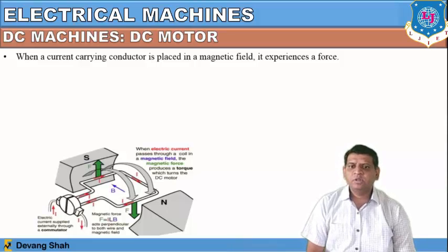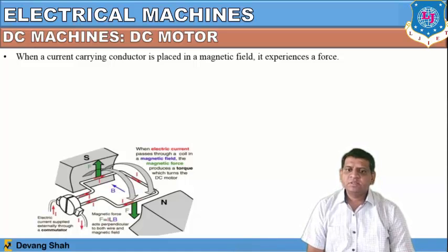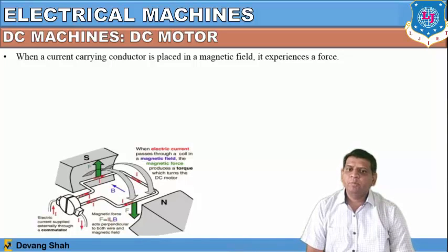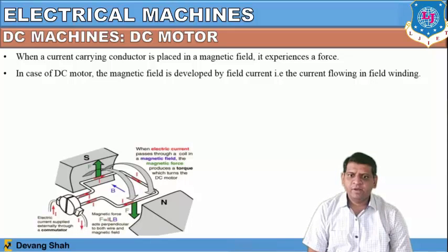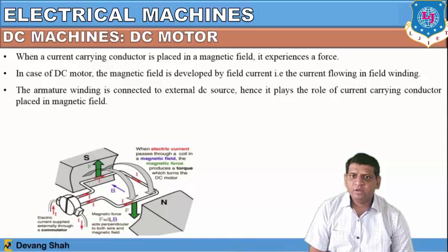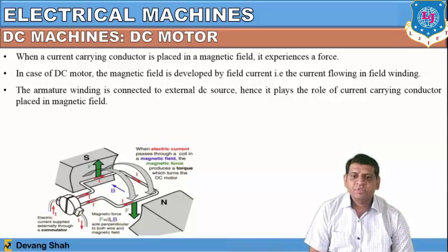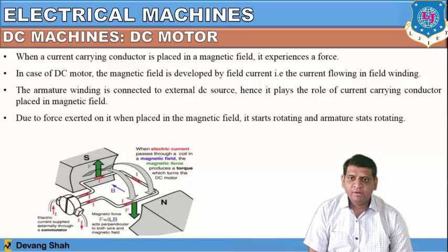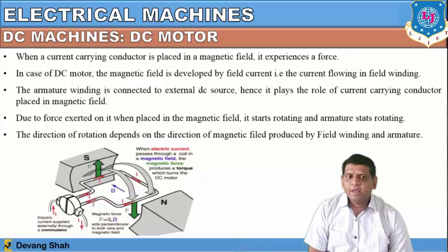This is the same principle discussed during the three-phase induction motor — the rotating magnetic field. The force exerted on the conductor carrying current converts into mechanical energy. In the DC motor, the magnetic field is developed by the field current flowing in the field winding, and the armature winding is connected to an external DC source, acting as a current-carrying conductor placed in a magnetic field. Due to this force, the armature starts rotating, and the direction of rotation depends on the direction of the magnetic field produced by the field winding and armature.